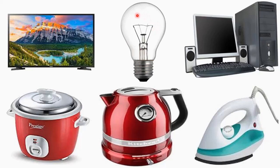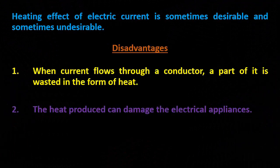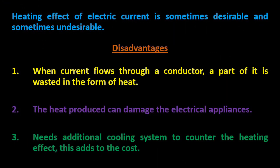Monitors and CPUs also produce heat due to current flow. A rice cooker, electric jar or electric boiler works on the heating effect of current. An electric iron also works based on the heating effect of current — if the heat produced by the iron is very large, your clothes may get burned. The third disadvantage is the need for additional cooling systems to counteract heating effects, which adds to the cost.